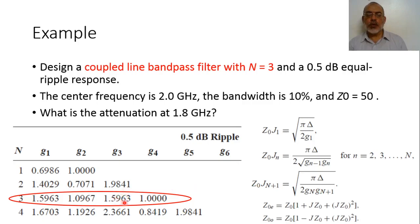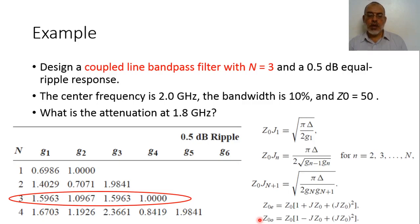Z0·J4 equals pi·delta over 2 times the square root of G3·G4, where G3 is 1.5963 and G4 is 1. From the inverter values, we obtain the even impedance and the odd impedance. From the even and odd impedances for each section, we can determine the width and the separation between the coupled line transmission lines. The length of each section is lambda/4, so the length is the same for all sections.